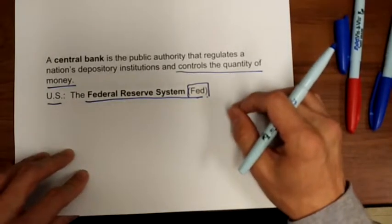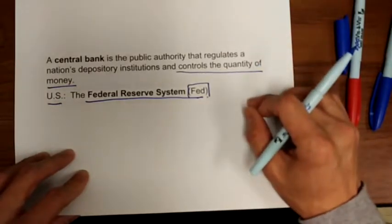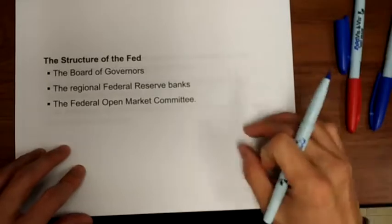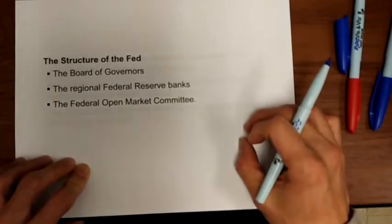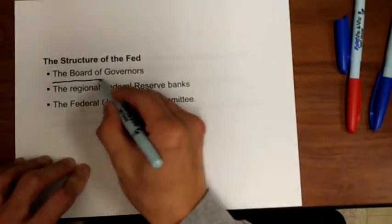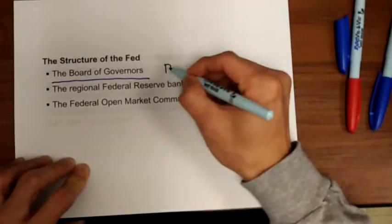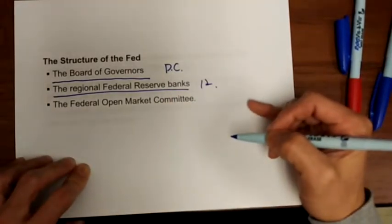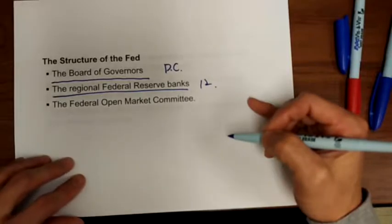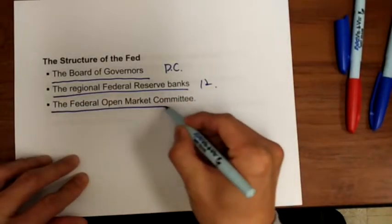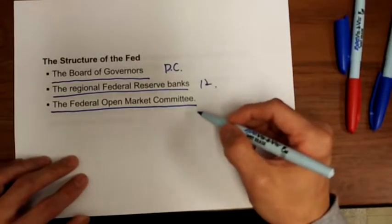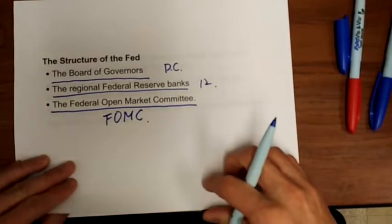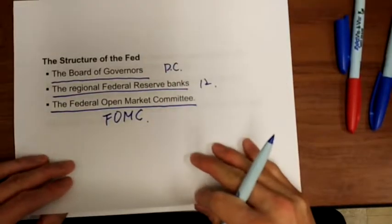In the United States, we don't have a single central bank. Instead, we have a central banking system. This central bank system includes three parts: the first is the Board of Governors in D.C., then we have 12 regional Federal Reserve Banks, and the component responsible for conducting U.S. monetary policy is called the Federal Open Market Committee, FOMC.